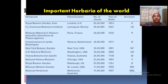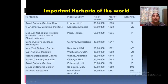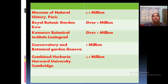Important herbaria of the world include: the Royal Botanical Garden, Kew; the V.L. Komarov Botanical Institute, Russia; the Muséum National d'Histoire Naturelle, Paris; the Conservatoire et Jardin Botaniques, Switzerland; the New York Botanical Garden; the U.S. National Museum; the Vienna Botanical Garden; the Natural History Museum, UK; and the Missouri Botanical Garden. In terms of specimen numbers, the Museum of Natural History, Paris, contains 6.5 million herbarium specimens; the Royal Botanical Garden, Kew has over 5 million; and the Komarov Botanical Institute also has over 5 million.